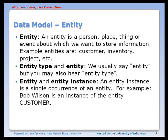There is a distinction between entity and entity instance. An entity instance is a single occurrence of an entity. So we might have an entity called customer because we want to track data about customers, and one particular instance of a customer might be Bob Wilson — he is a customer.